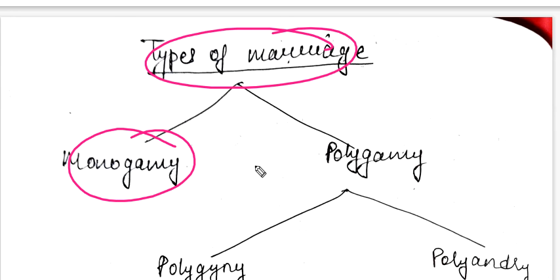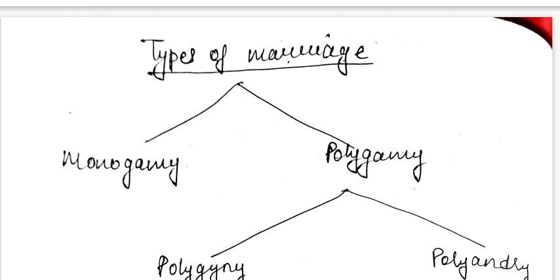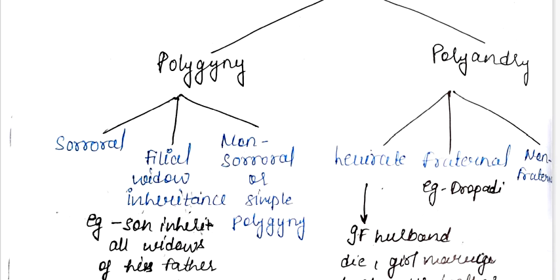We see types of marriage. One is monogamy, one is polygamy. Types of marriage are monogamy and polygamy. Polygamy includes polygyny and polyandry.